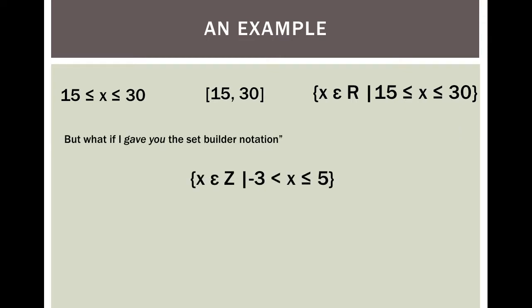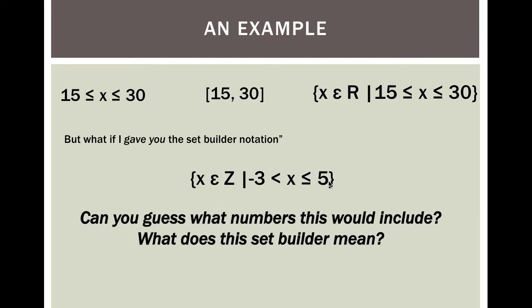What if I gave you the set builder and told you that X is in the set of integers such that X is between negative 3 and 5? Can you guess what numbers this would include? If X has to be an integer, I can't use decimals. I know it has to be numbers between negative 3 and 5, including 5. So in curly brackets, the integers between negative 3 and 5 are: negative 2, negative 1, 0, 1, 2, 3, 4, and 5.